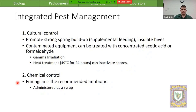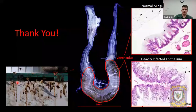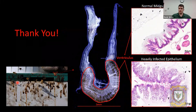For Nosema apis, heat treatment can be used to inactivate the spores. If the clinical cutoff of more than one million spores per bee is reached, fumagillin — administered in syrup — is an antibiotic that can be used in Canada. It's not on label in the EU, so there are other products including prebiotics and probiotics that Dr. Medici is going to talk about.